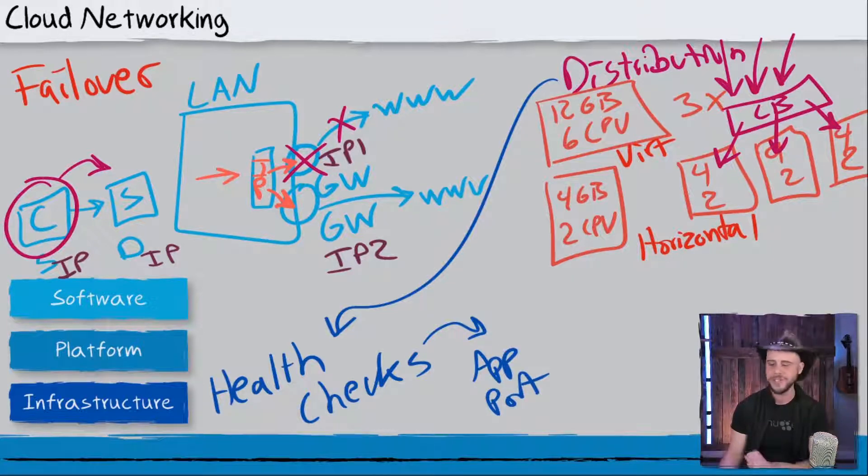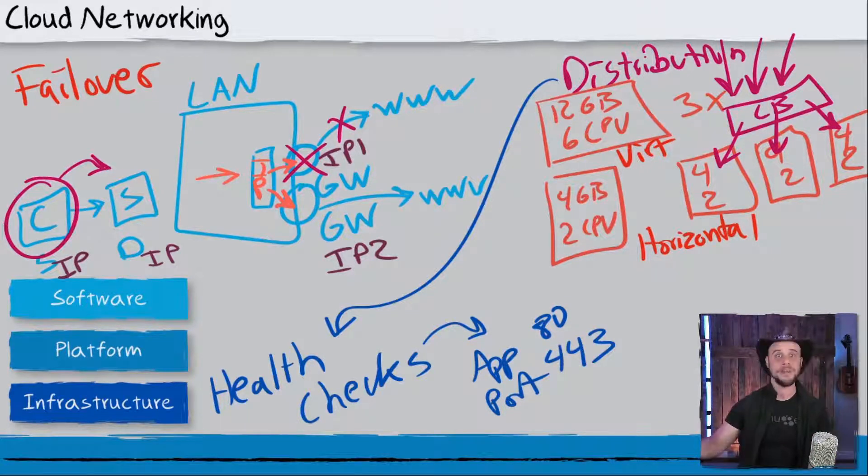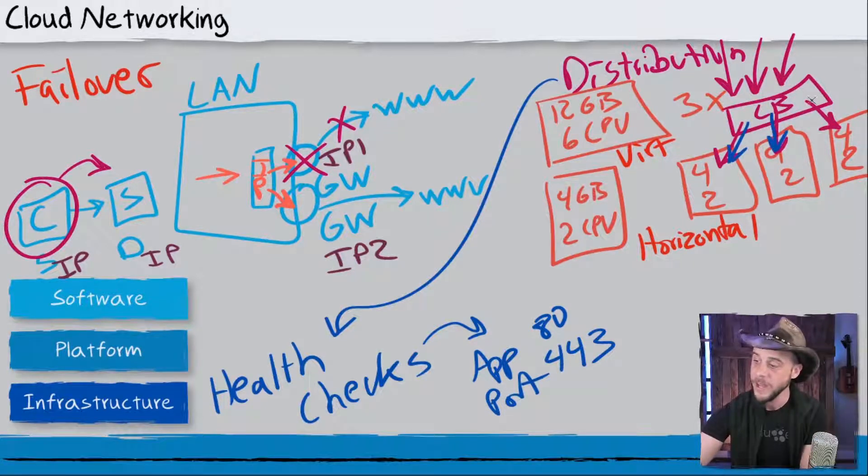This would be like a little, hello, are you awake? Are you still responding? Are you able to handle web traffic requests? Typically, these are going to be directed at something that's like an application port. It might be port 80 for web traffic or port 443 for SSL traffic. The point is we can then contact those systems and say, hey, are you available? And as long as they're still available, we keep sending traffic to them.